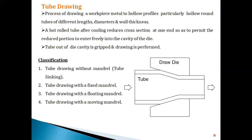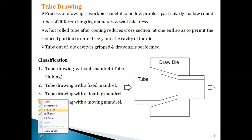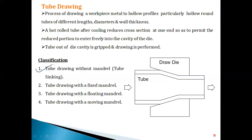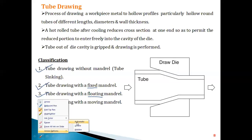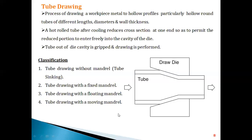In tube drawing, classification is done depending upon the use of a mandrel. The first method is tube drawing without a mandrel, also called tube sinking. The second is tube drawing with a fixed mandrel. The third is tube drawing with a floating mandrel, where the mandrel floats throughout the drawing process. The fourth is tube drawing with a moving mandrel. For all these methods, a mandrel is required except the first.